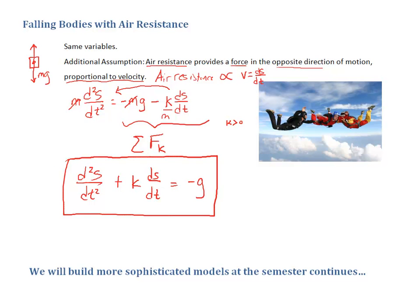That is the differential equation model for falling bodies incorporating air resistance. Our ultimate goal will be to find the actual function s(t), using solution techniques introduced in chapter 2. More sophisticated models will be built as the semester progresses, and once we can solve the differential equation we can graph it and use it to answer real questions.